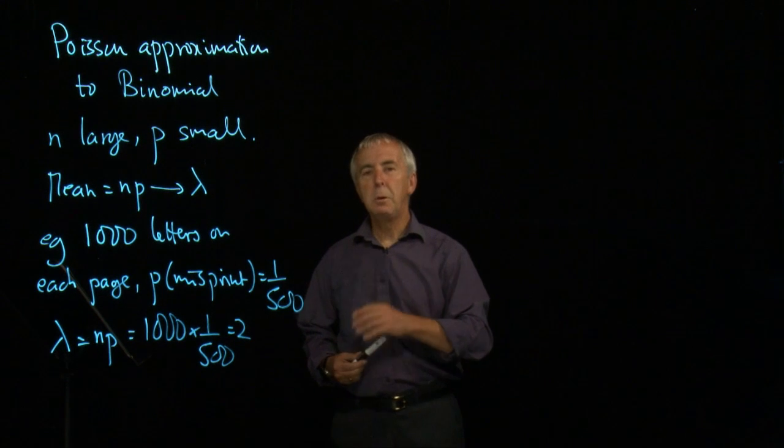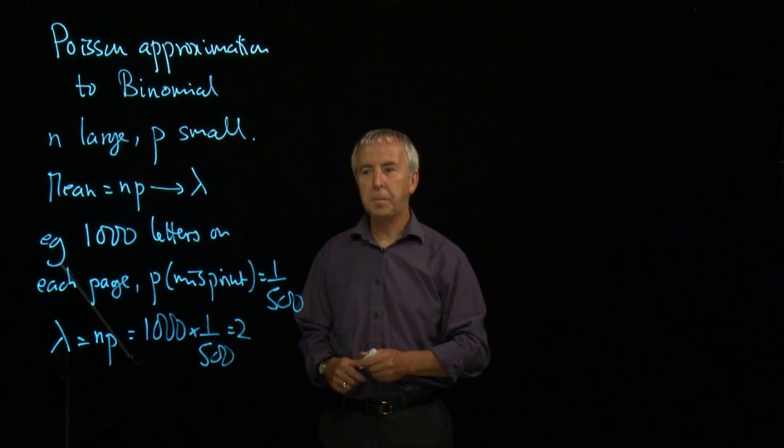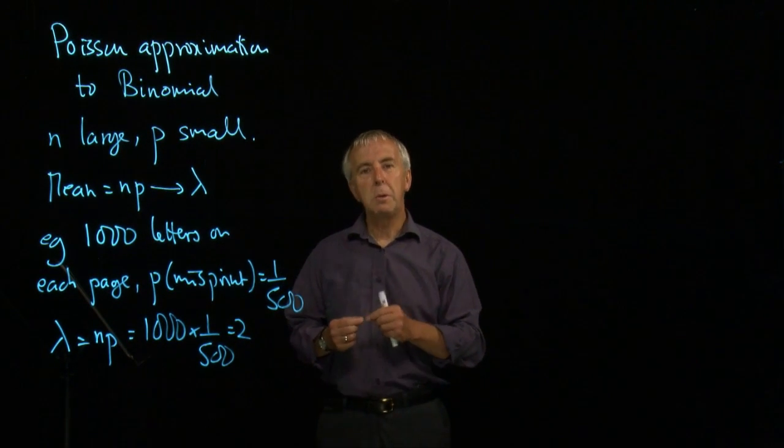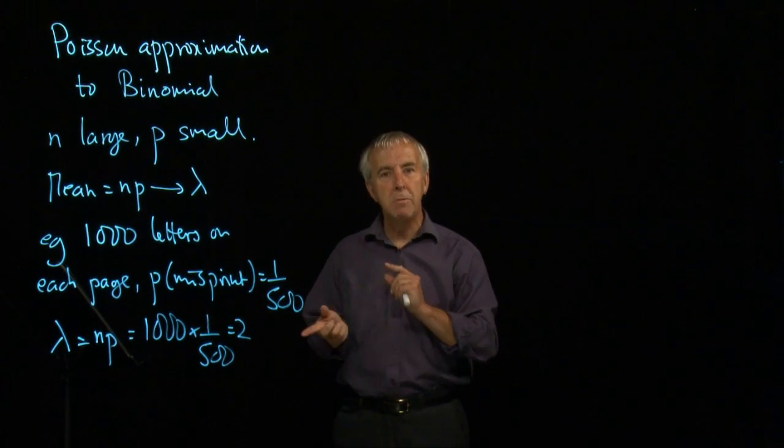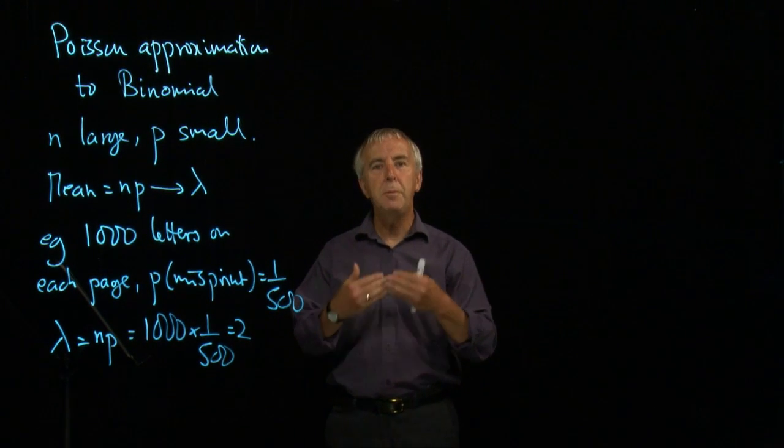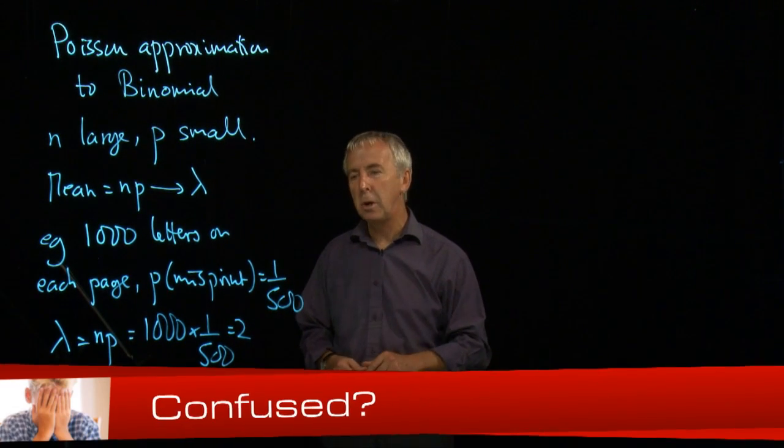In other words, we would expect two misprints on each page. But strictly it's a binomial calculation. We're doing a thousand experiments. Each letter is either a misprint or it's correct. We're doing this a thousand times. And each time the probability of a misprint is the same. So it's a binomial situation.